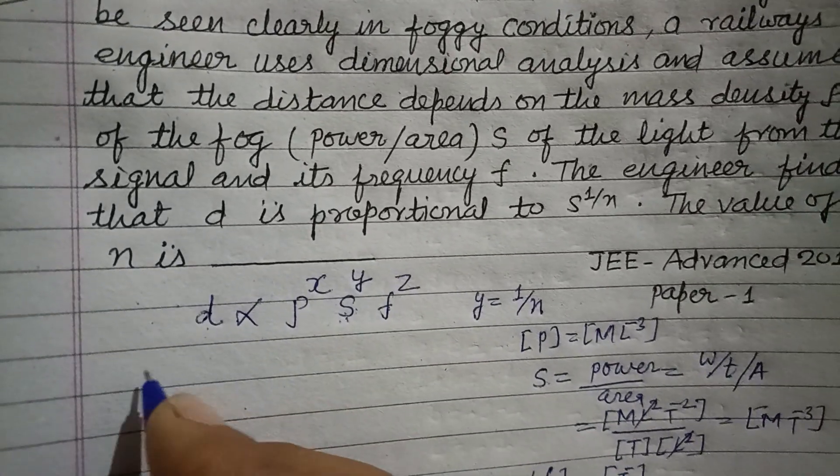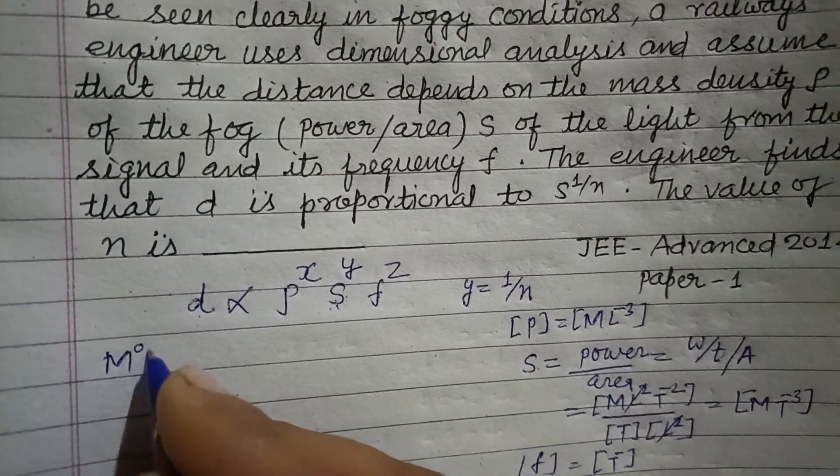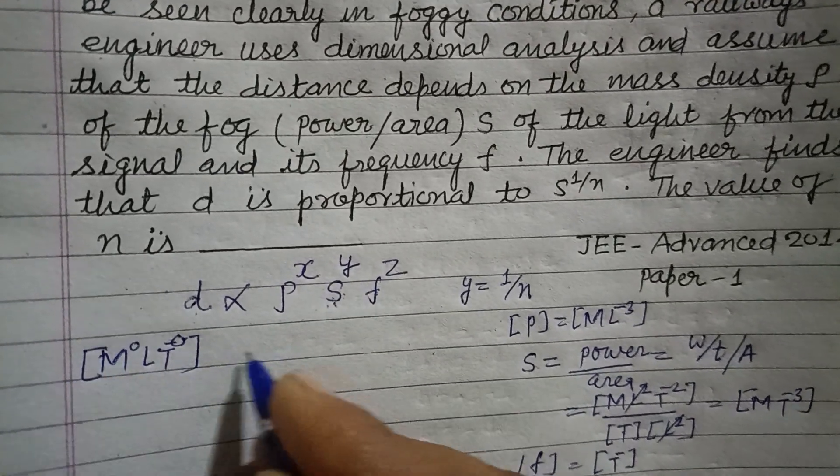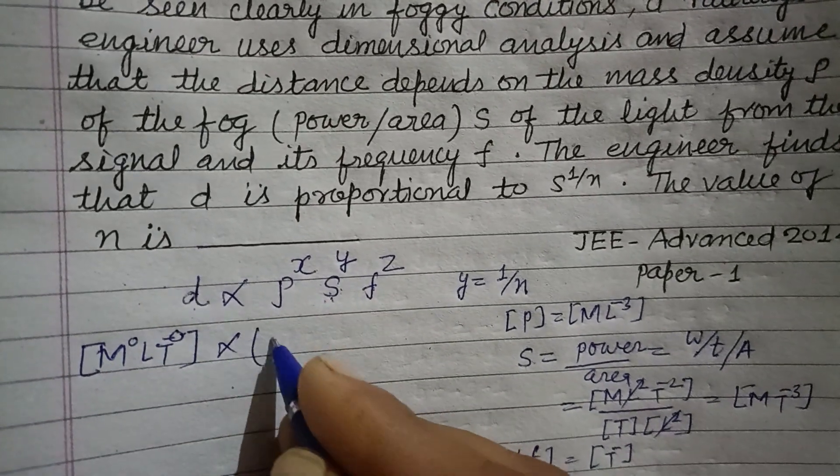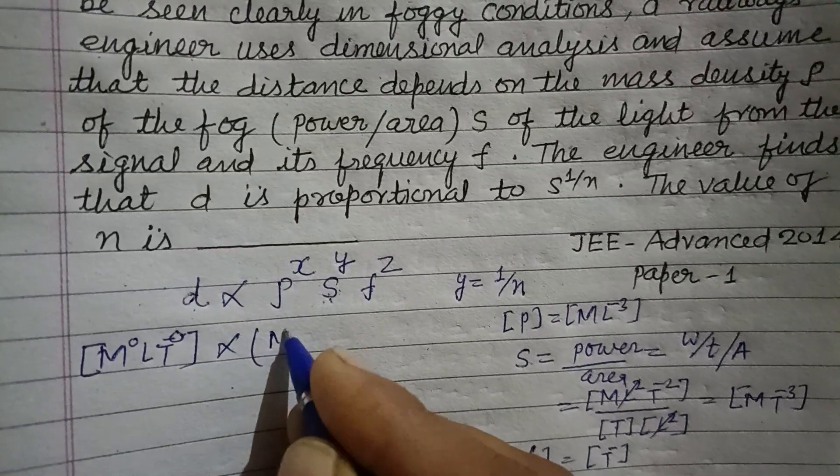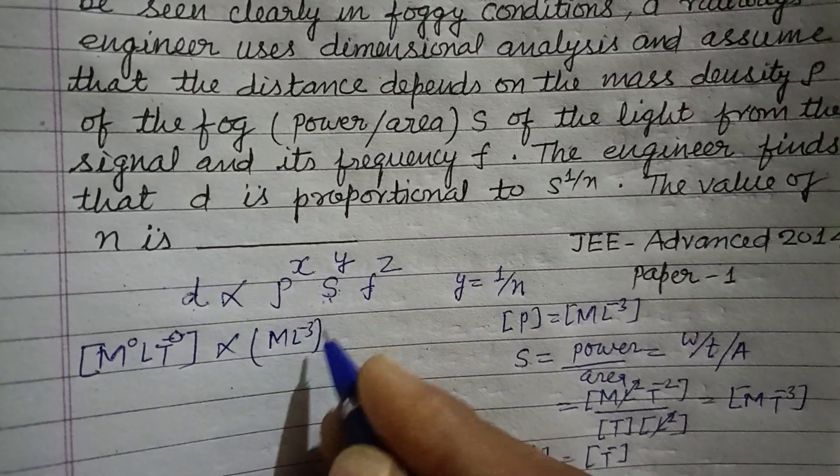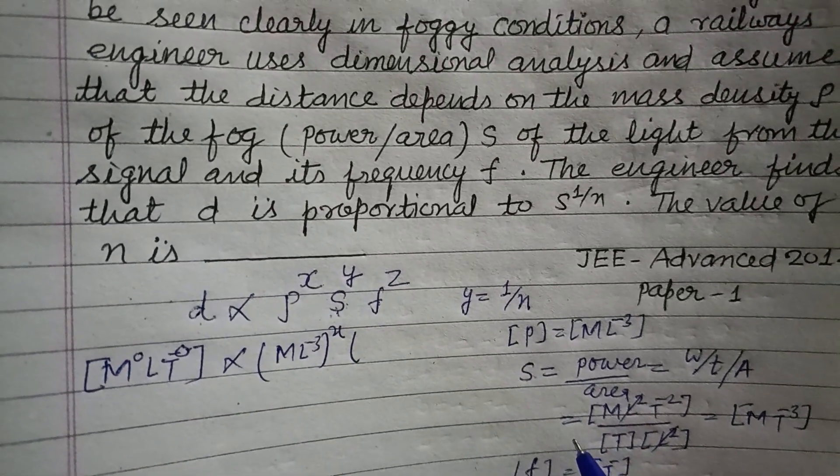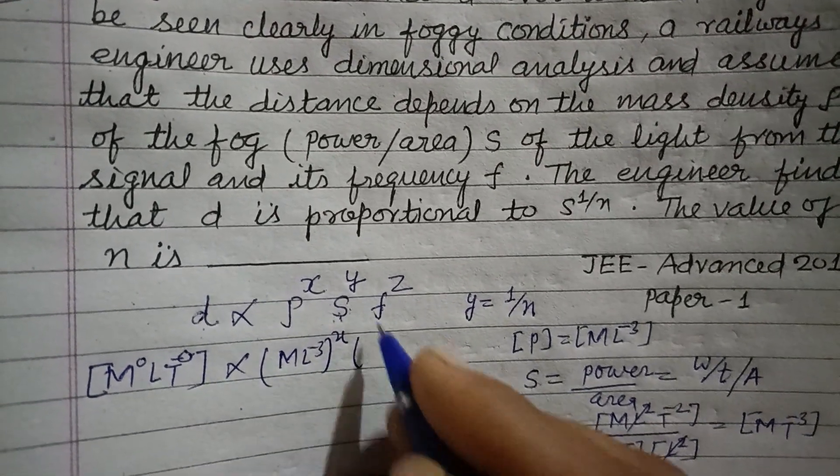So putting the dimensions on both sides here, M^0L^1T^0, this is dimension of distance proportional to dimension of density which is ML^-3 to the power x, dimension of this s intensity which is...